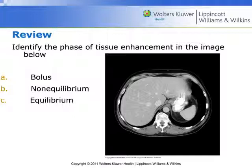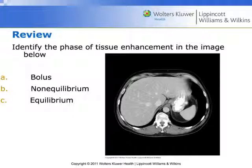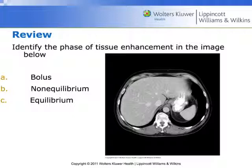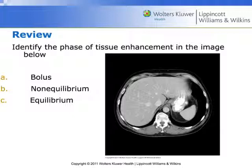Looking at these images, we say this is non-equilibrium phase. Why? There's a little bit of contrast in the aorta but it's about equivalent to the amount in the hepatic veins. And what's visible on the left side of the patient's body in that upper left quadrant — that's the rugae or folds of the stomach with oral contrast inside the stomach. So this is non-equilibrium phase.